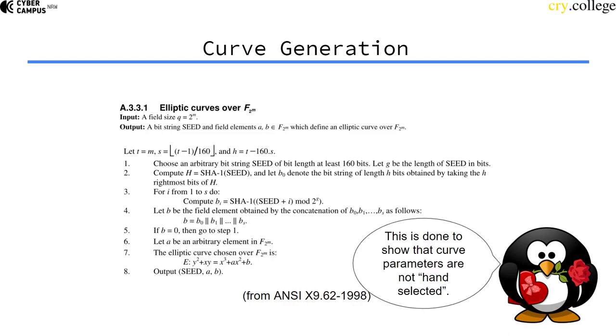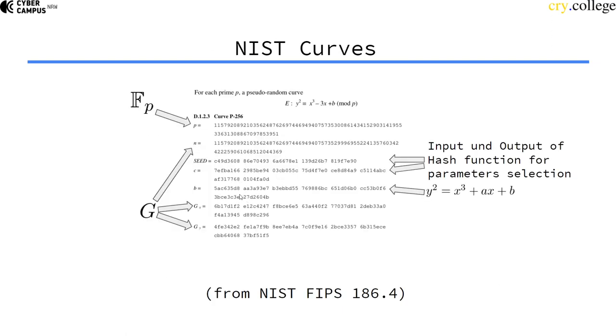I just want to mention that this is only done to show that these parameters, for example B, are not hand selected. That has historical reasons because people were afraid that these curves might be constructed in a way that makes it easy for a nation state to break elliptic curve Diffie-Hellman.